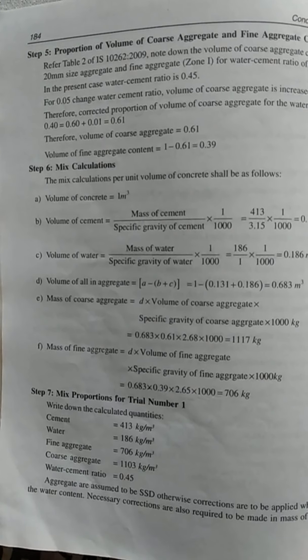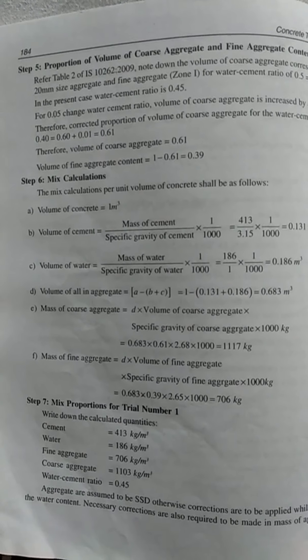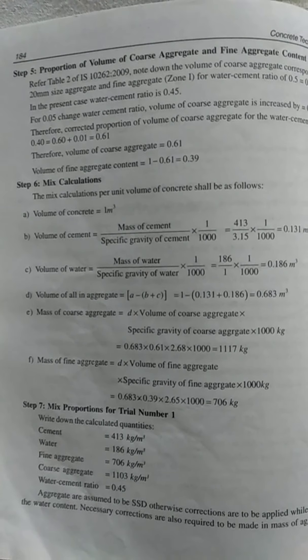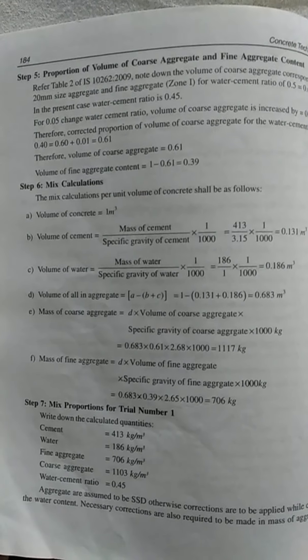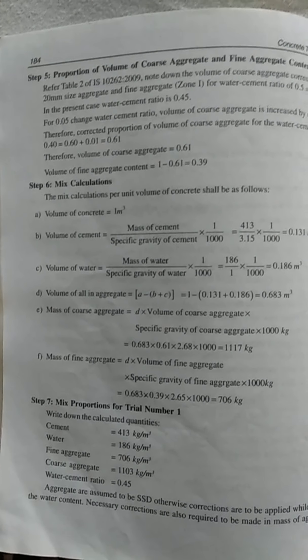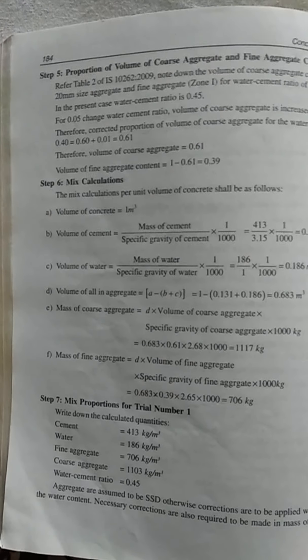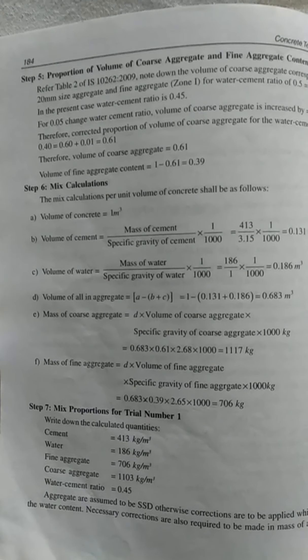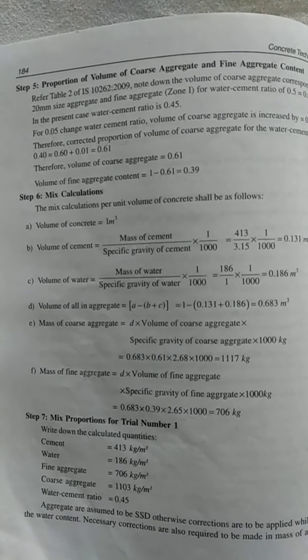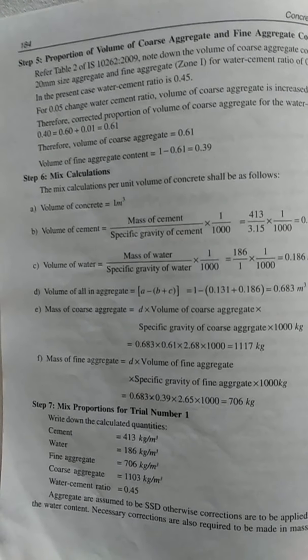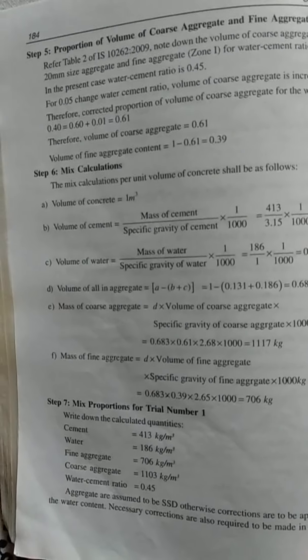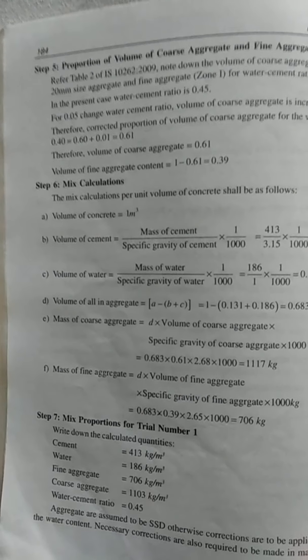Step 6: Mix design calculations for 1 m³ of concrete. Volume of cement = (mass of cement ÷ specific gravity of cement) × (1/1000). Calculate volume of water similarly. Since superplasticizer is not used, proceed directly to volume of all-in aggregate = 1 − (volume of cement + volume of water). Then separate coarse and fine aggregate using: mass = specific gravity × volume of all-in aggregate × fraction × 1000. Finally, tabulate cement content, water content, fine aggregate, coarse aggregate, and water-cement ratio.